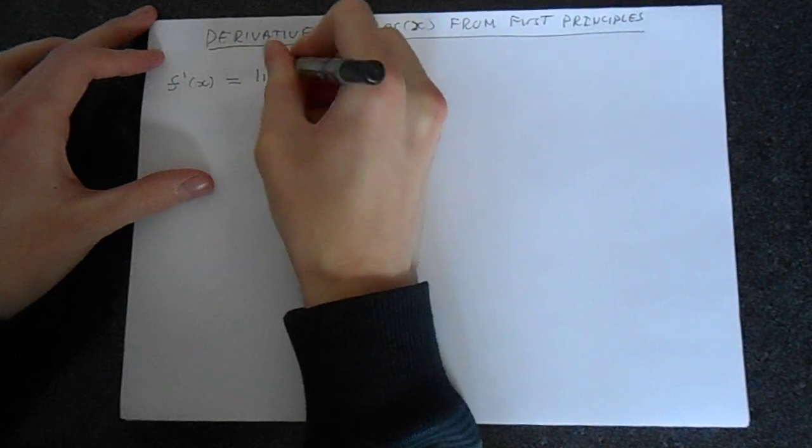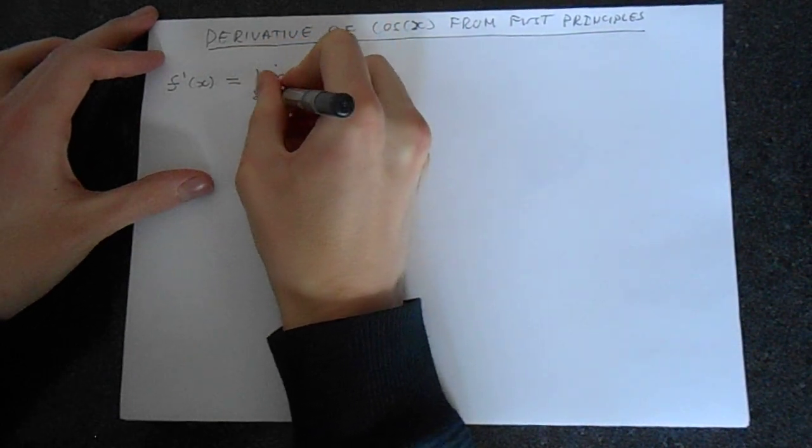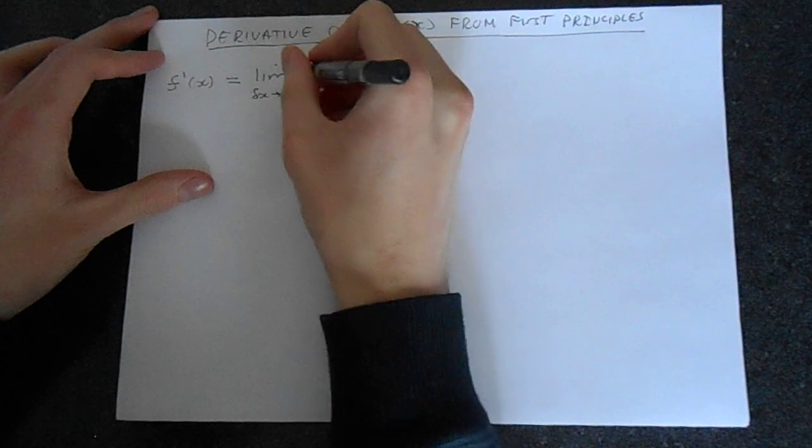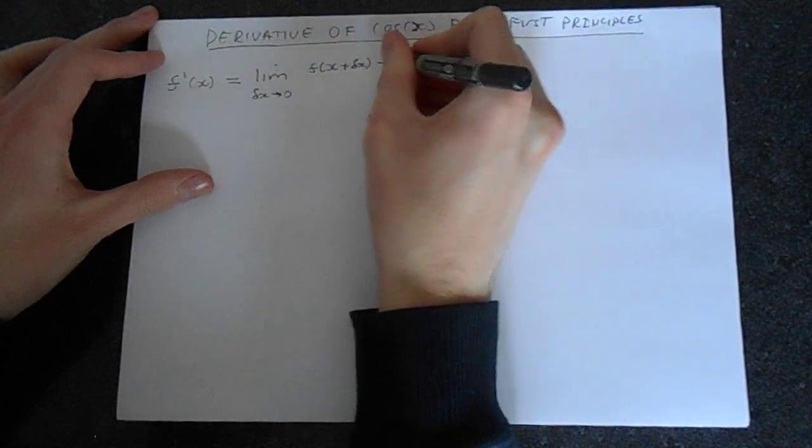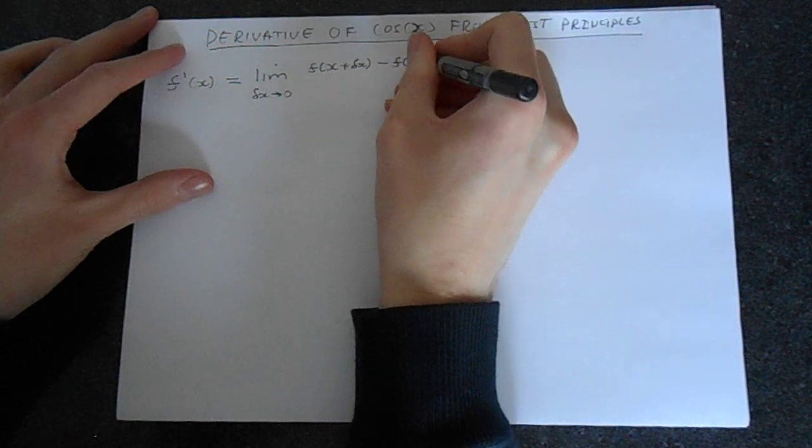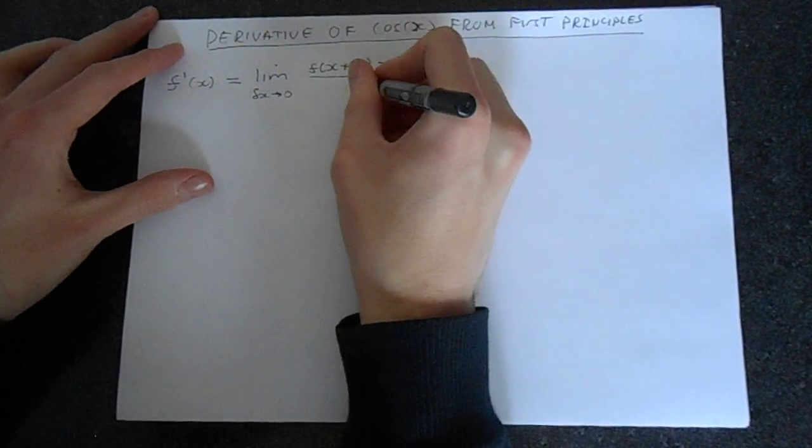It is equal to the limit as delta x tends to 0 of f of x plus delta x minus f of x over delta x.